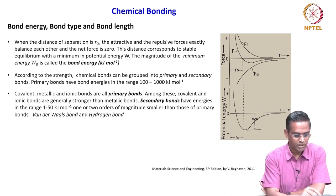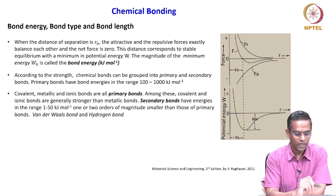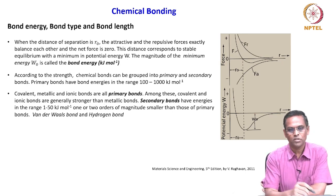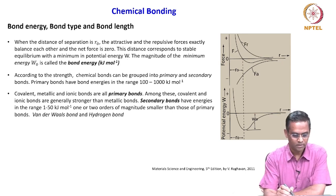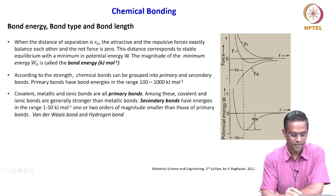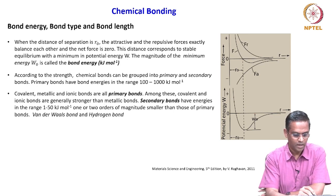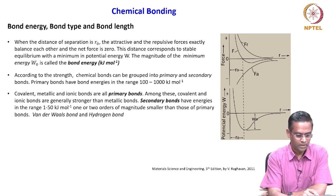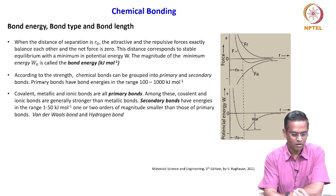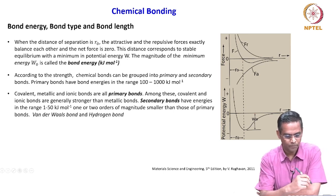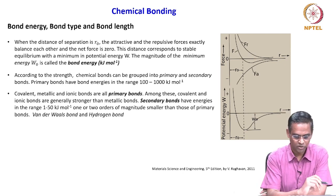Secondary bonds have energies in the range of 1 to 50 kilojoules per mole — much lower than primary bond energies, one or two orders of magnitude smaller. The examples are Van der Waals bonds and hydrogen bonds.